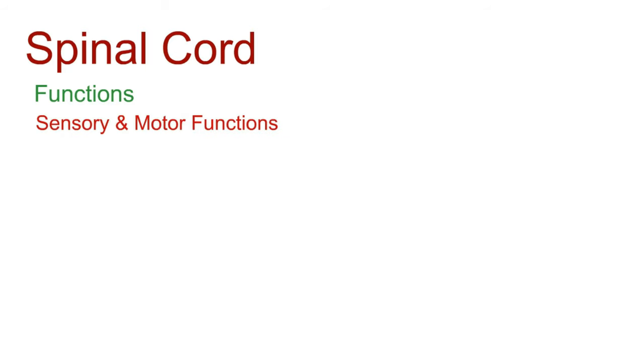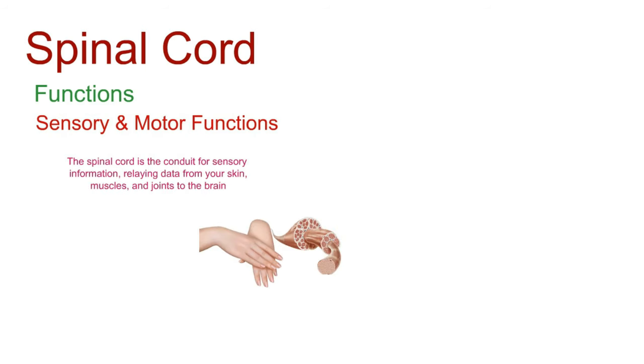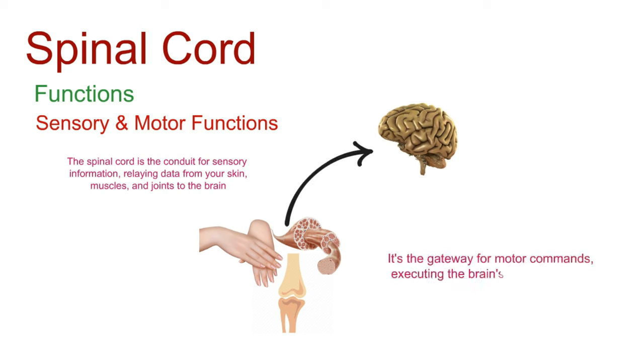Let's talk about sensations. The spinal cord is the conduit for sensory information, relaying data from your skin, muscles, and joints to the brain. On the flip side, it's the gateway for motor commands, executing the brain's orders to move muscles and carry out actions.